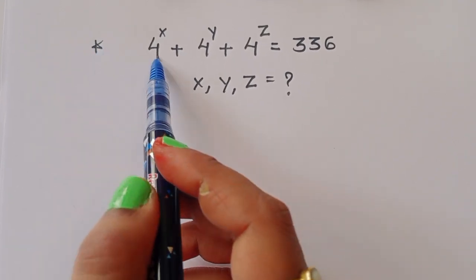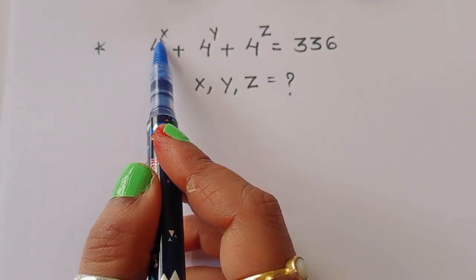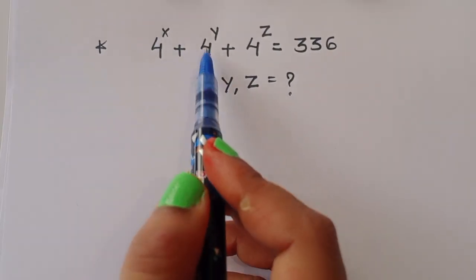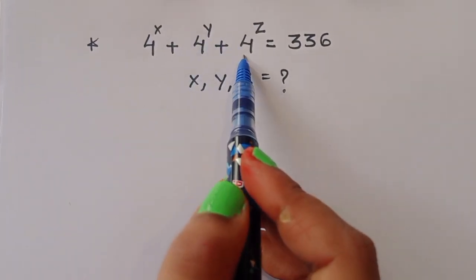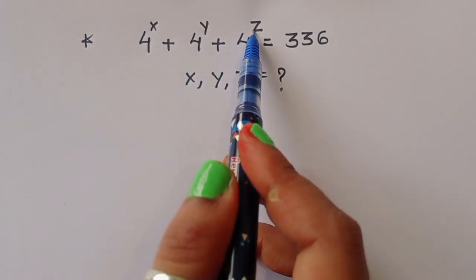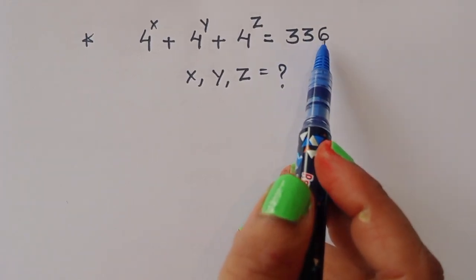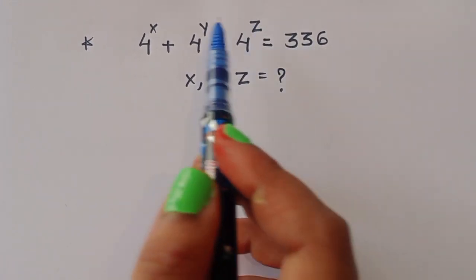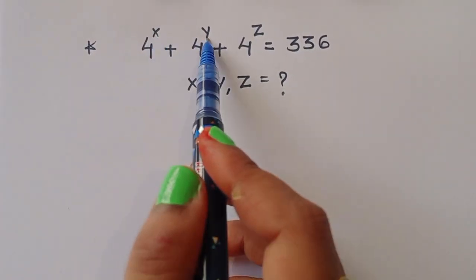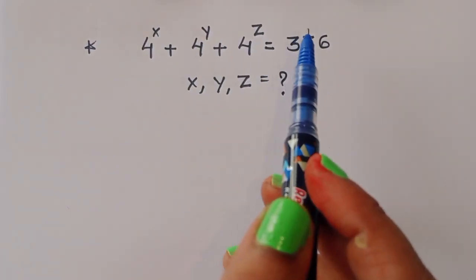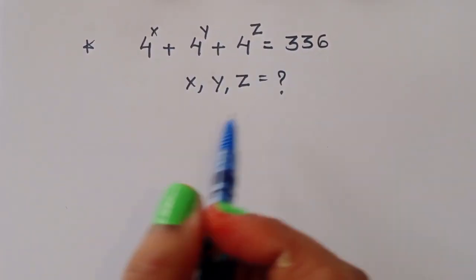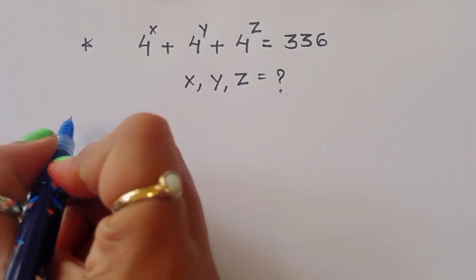The question is: given 4 power x plus 4 power y plus 4 power z is equal to 336, we have to find out the value of x, y, and z. Let's see the solution.